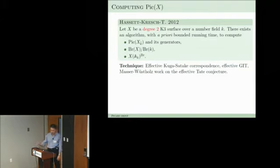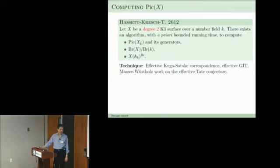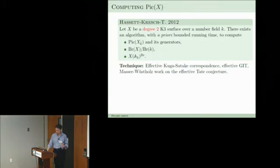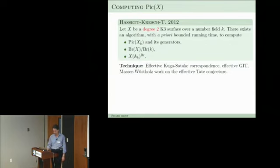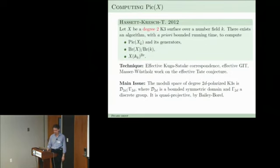To compute the Picard lattice we need some effective version of the Kuga-Satake correspondence. We end up with abelian varieties of dimension maybe 2 to the 19, which is also not really practical, but we have to employ effective results in arithmetic geometry: the Tate conjecture, GIT, and so on.